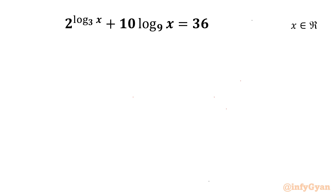Welcome back to InfiJar, my dear friends. In today's video we are going to solve one very interesting and challenging exponential equation from Math Olympiads. The equation is 2^(log x base 3) plus 10 times log x base 9, equal to 36. We have to find out all real solutions.